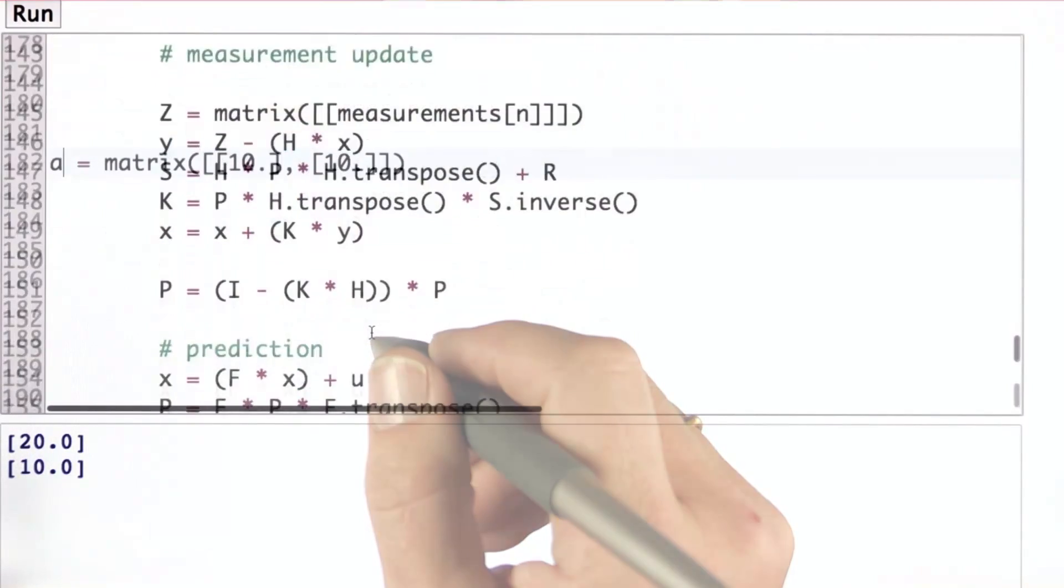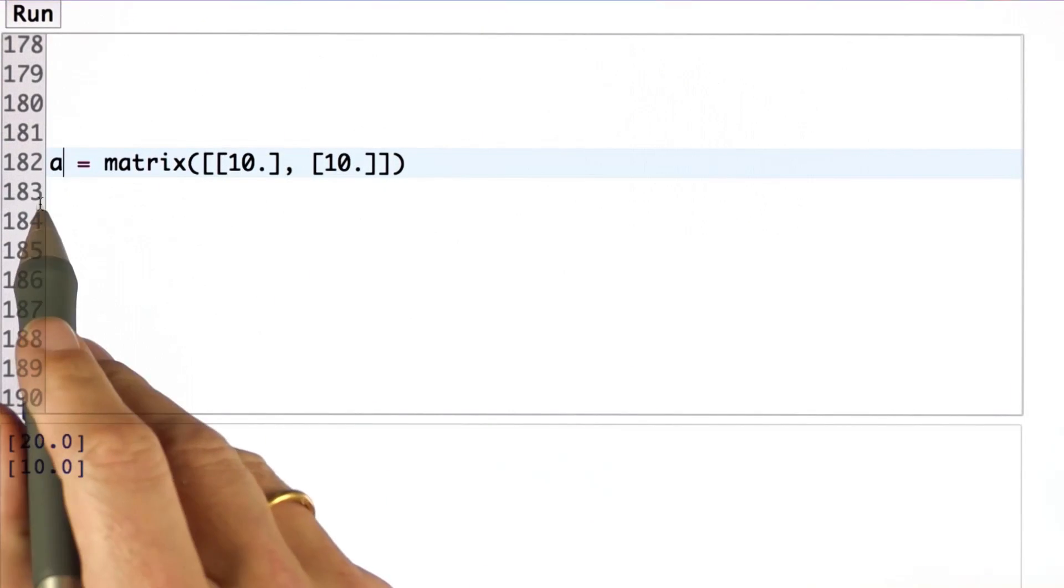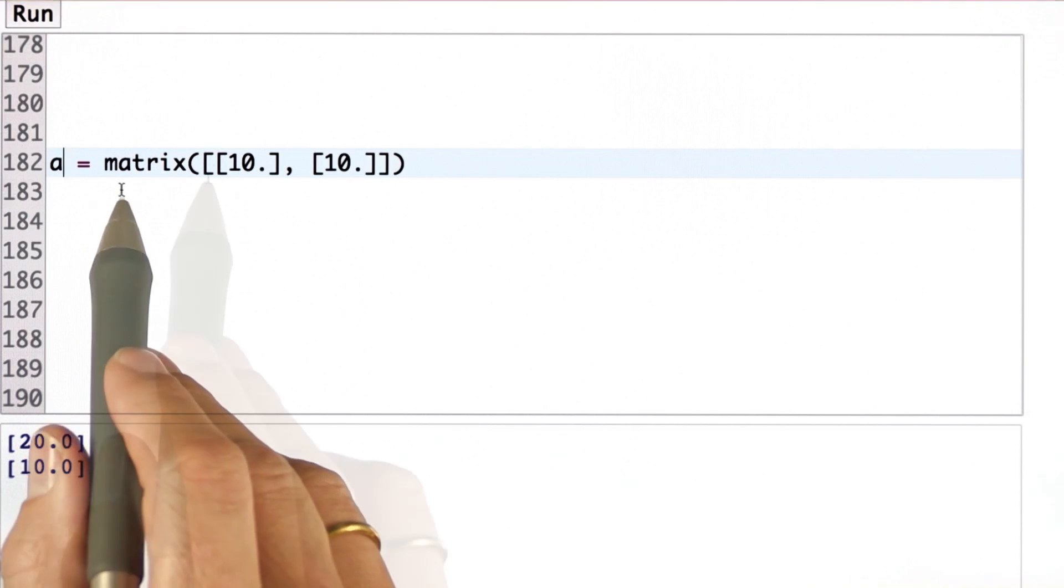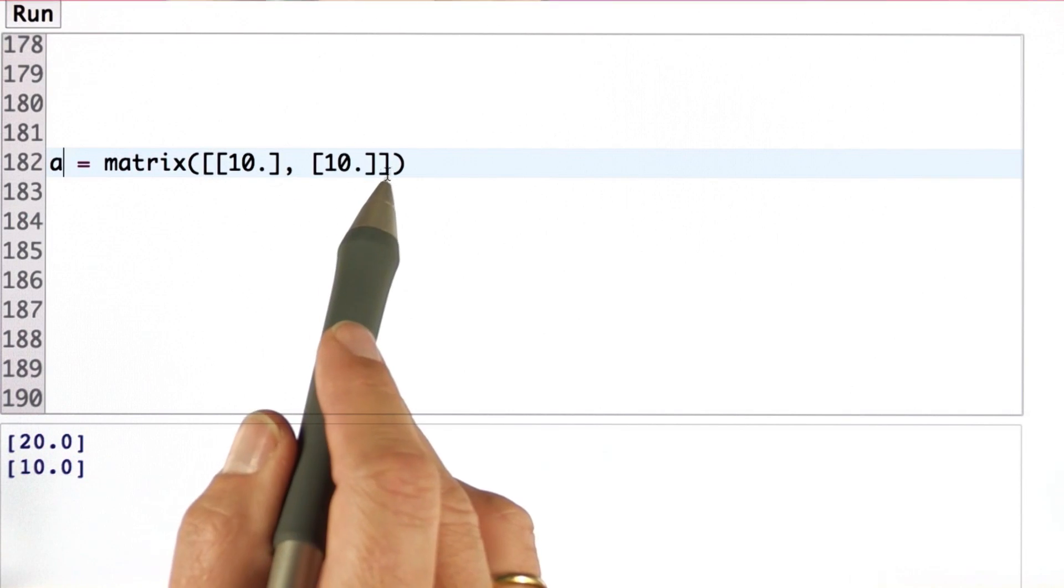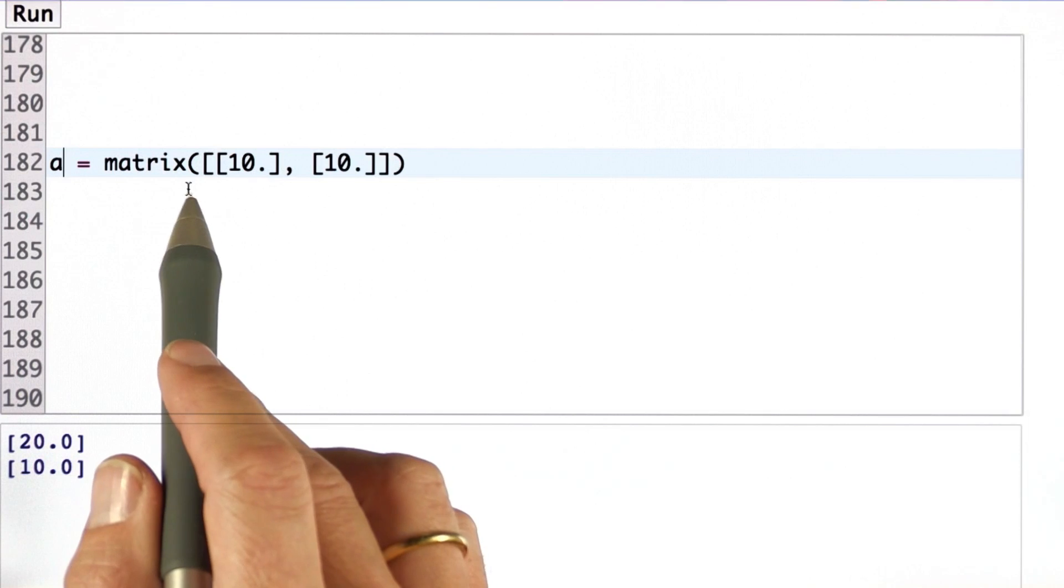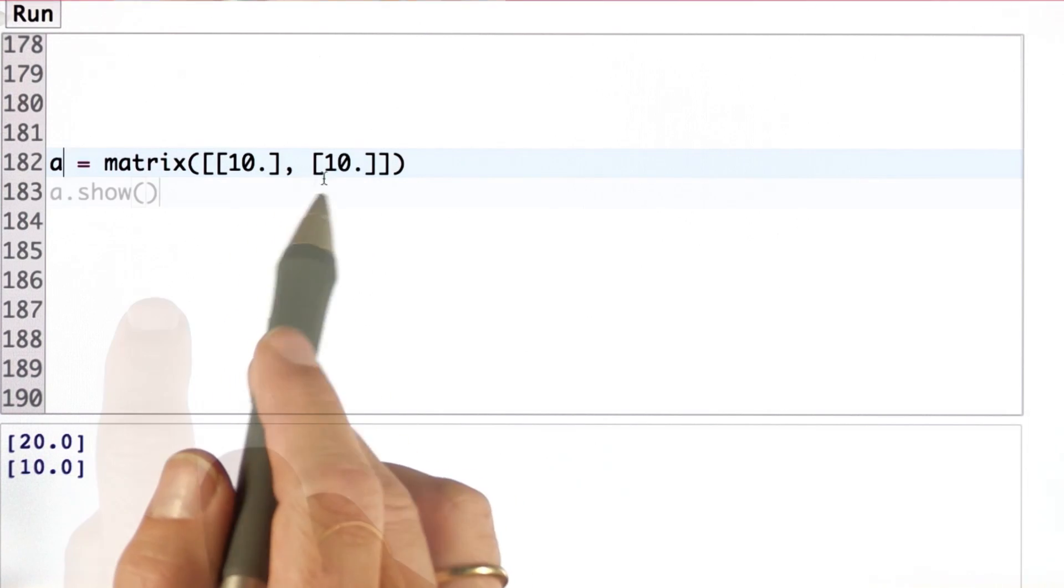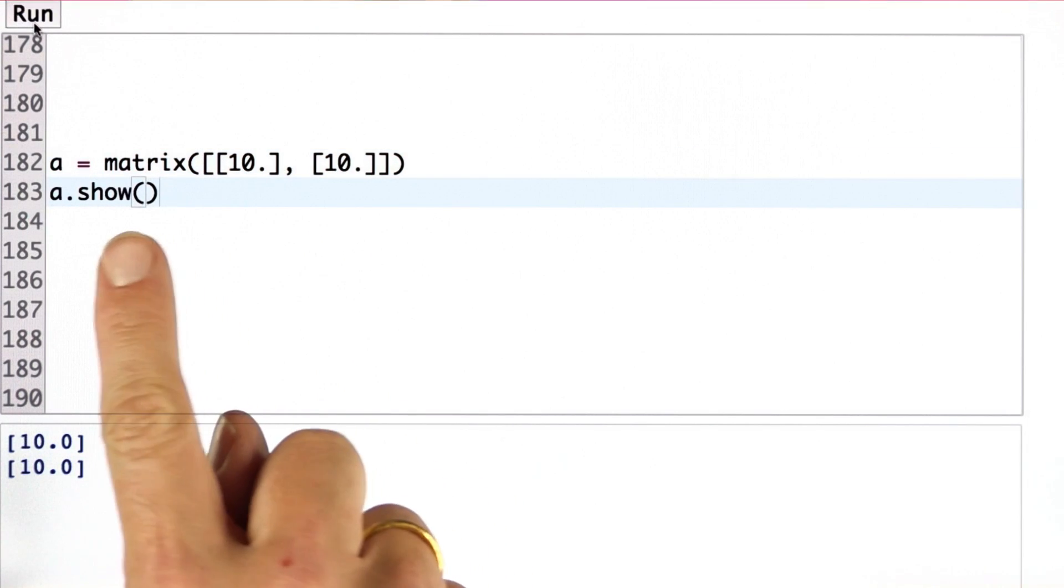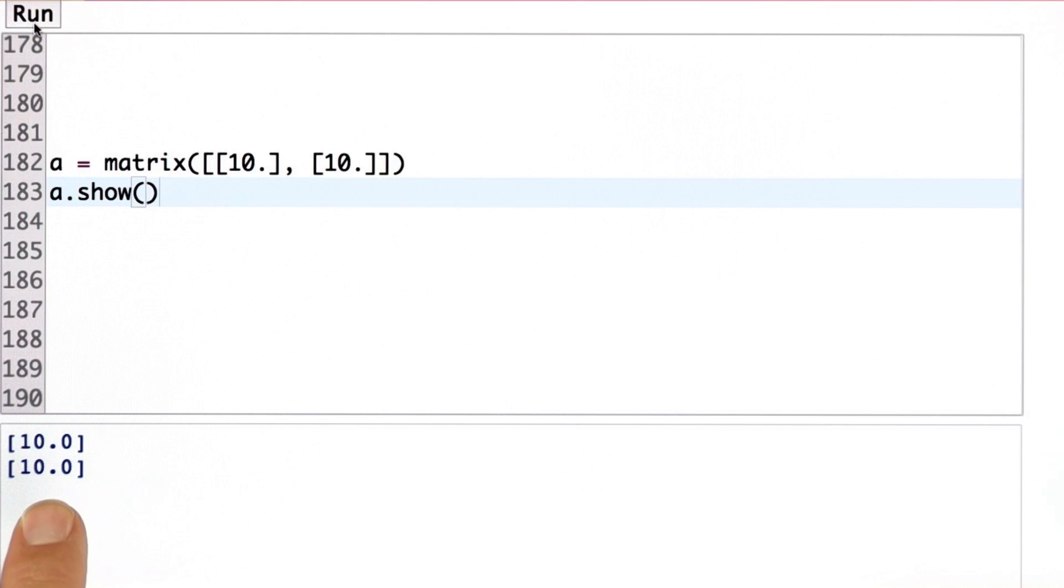I want to demonstrate it for you just for a second. You can make a matrix with a command like this, where the argument in the parenthesis is a two-dimensional matrix. In this case, it's a vertical vector. With the show command, you can print out the result, a vertical vector.